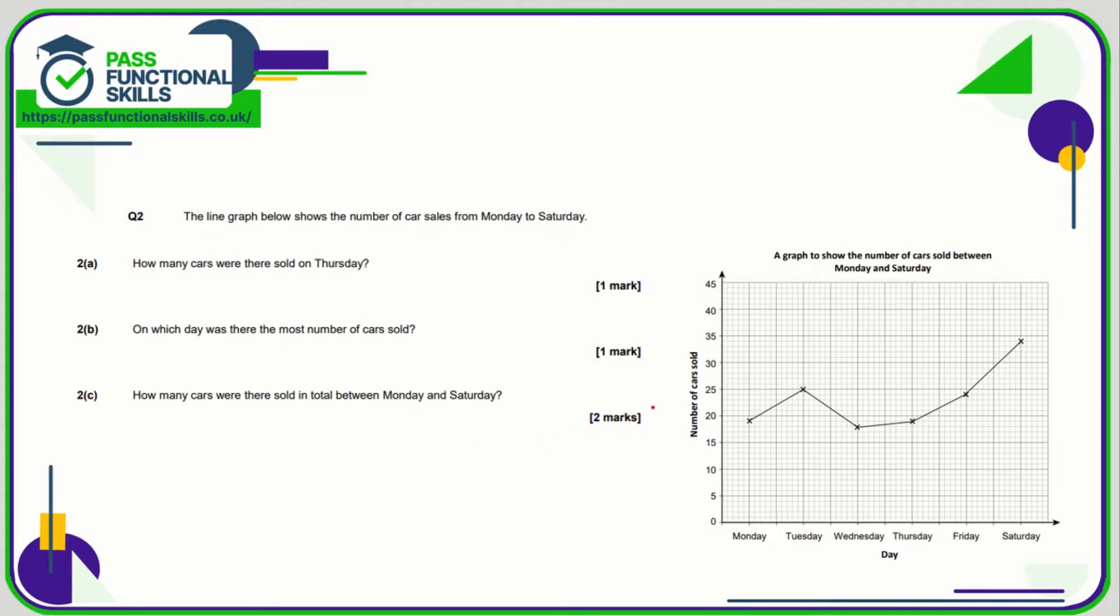Question number 2, we need to interpret the line graph. How many cars were sold on Thursday? Well let's go to Thursday and up, and that is 1 less than 20, so that is 19 cars. On which day was there the most number of cars sold? Well which dot is the highest? It's this one here and that corresponds to Saturday.